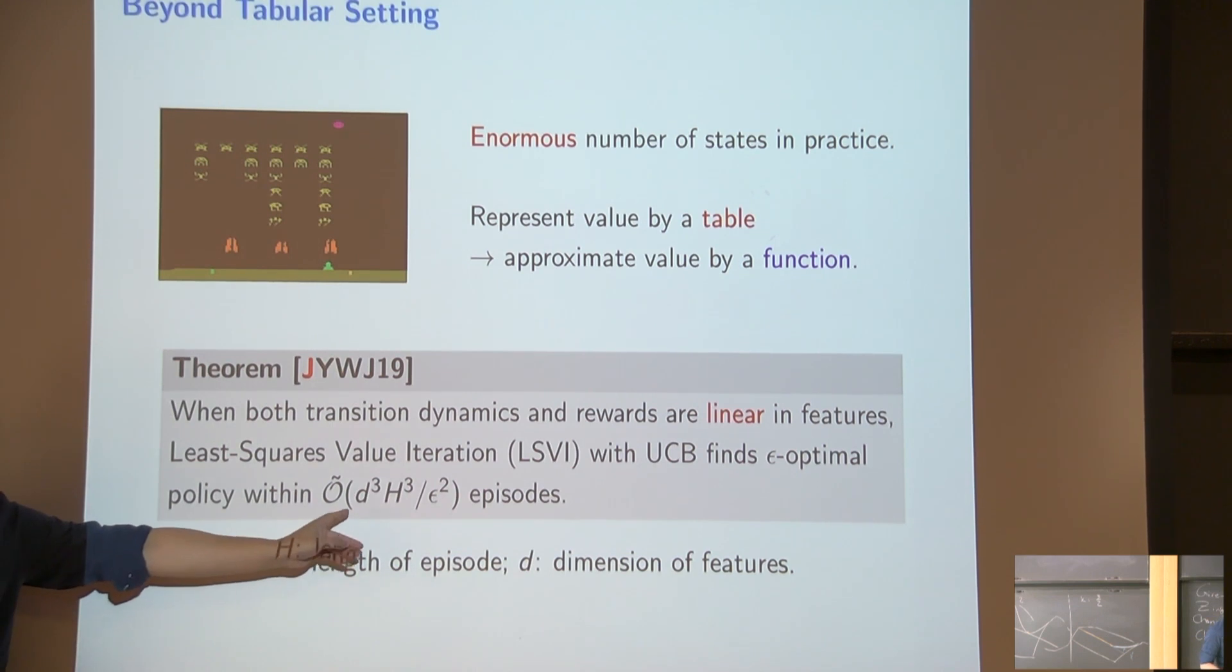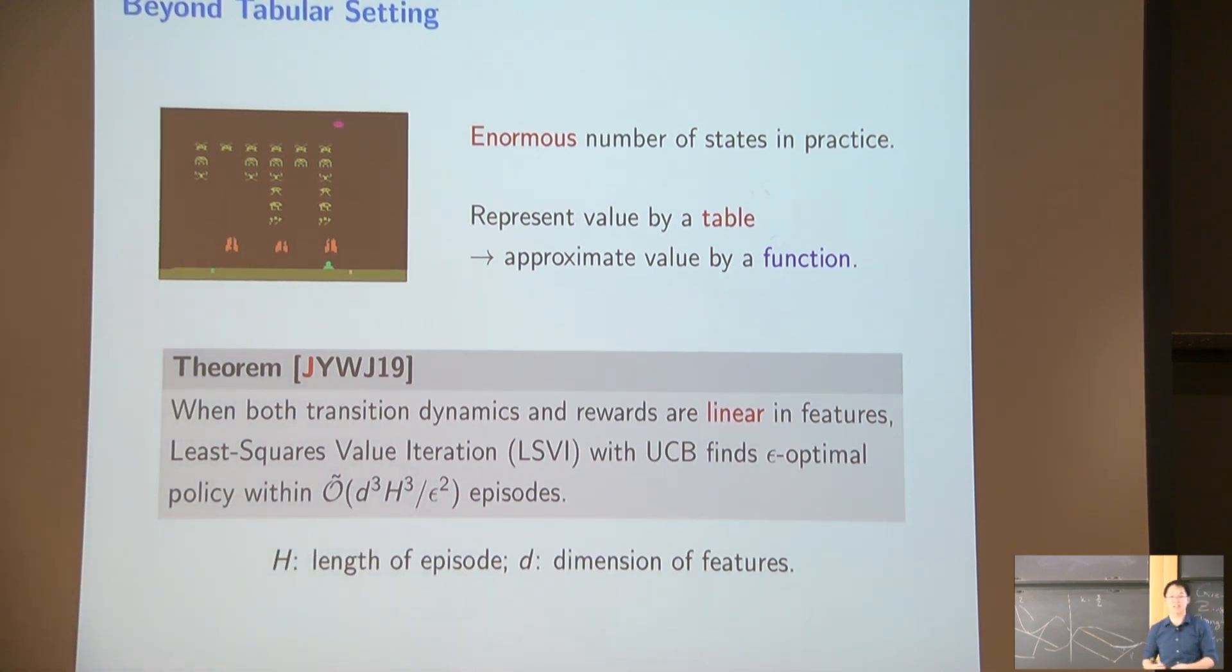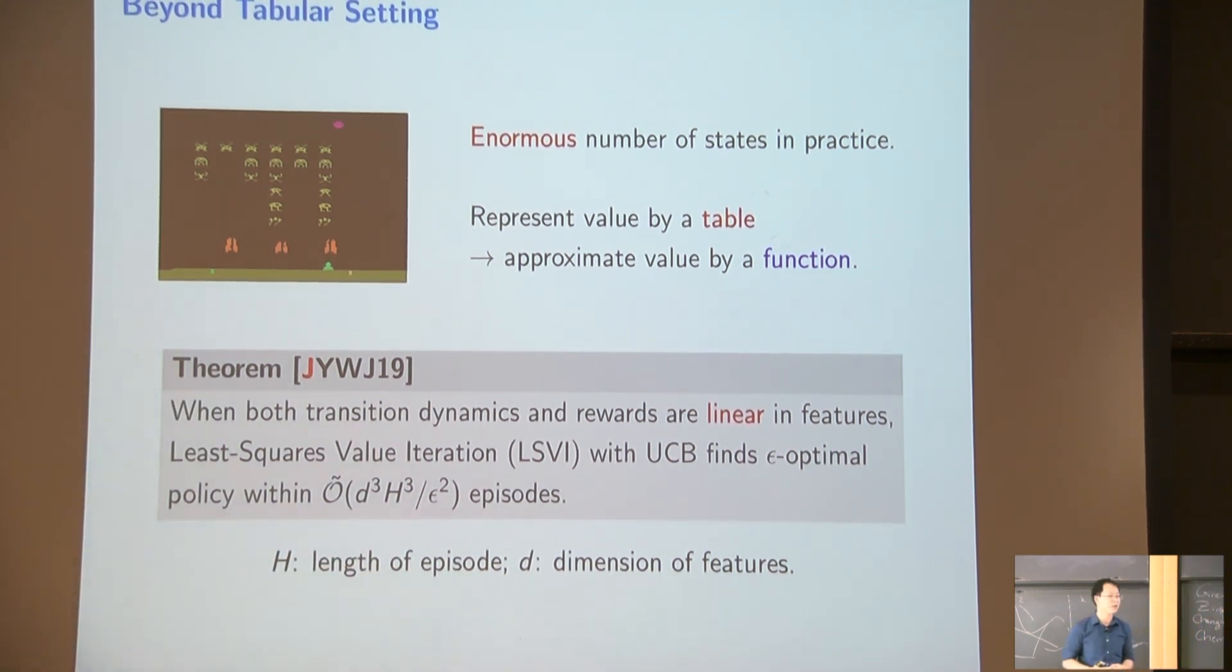Here, instead of having the number of states and action, actually replace everything by the dimension of features. So that although even if the number of states is super large, they may be like exponential in dimensionality, but I'm still getting everything in polynomial.